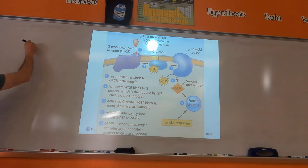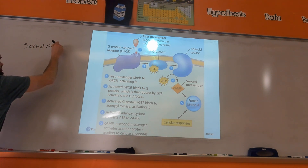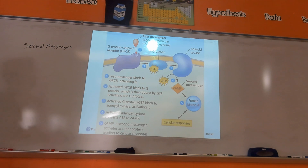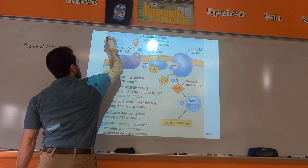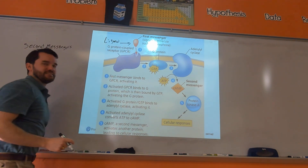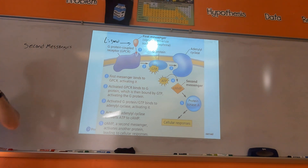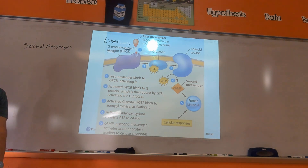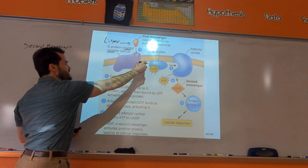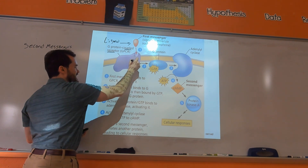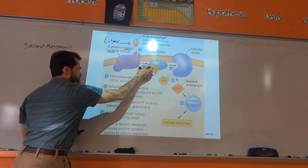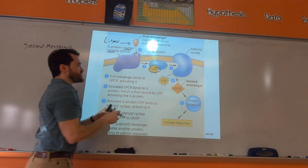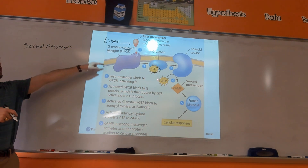I want to talk about second messengers. They do exactly what the name makes you think they do — they are the second messenger. The first messenger is the ligand. I showed you G-protein coupled receptors (GPCR) last class. That ligand binds to a receptor that is coupled with a G-protein. When this ligand binds, this G-protein gets activated by adding GTP — that's why it's called a G-protein, it gets turned on by GTP. GTP moves across the membrane to a membrane enzyme called adenylyl cyclase.